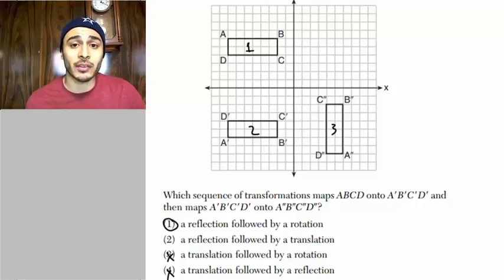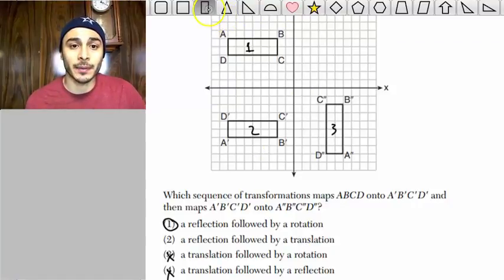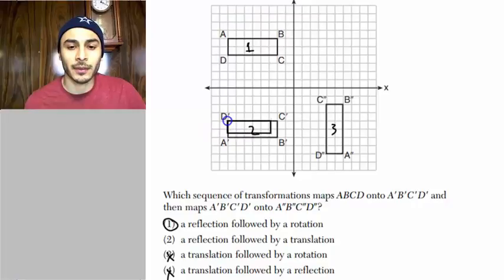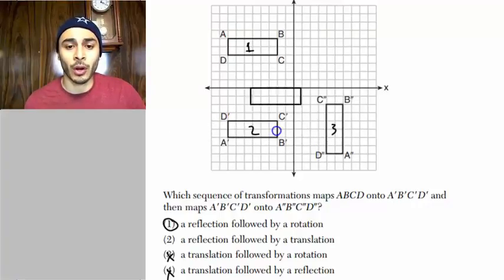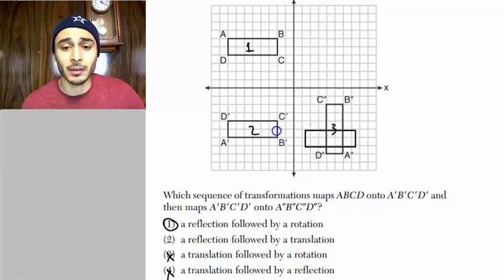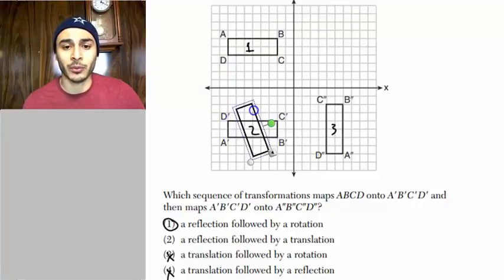A translation is simply just a slide, right? So if we have this image, simply sliding it will never produce this image. You can only slide to the right, or slide to the left, or up or down. And no slide will ever get you from this rectangle to that rectangle. You must rotate. A rotation needs to take place to go from this to that.